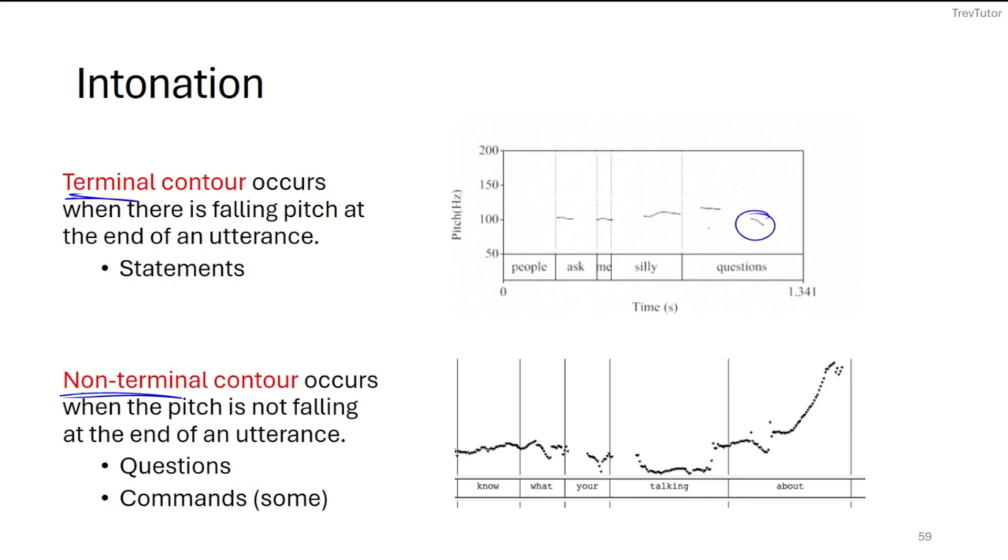Now non-terminal contour is when the pitch goes up at the end. So when we ask questions, we do this. So what are you talking about? That can go up. And even in some commands, like when you say leave, it can go higher. Usually most of my sentences end with a low contour. That's just a consequence of autism. In some case, I have difficulties controlling my pitch and intonation. But for most regular speakers, with questions and commands, it goes up and with statements, it goes down.